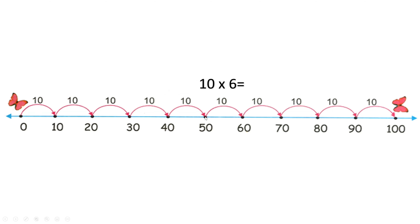10 times six. I'm going to jump 10 six times, so I need to do six jumps. Let's do it together: one, two, three, four, five, six. What number did you land on? 60. Amazing. So 10 times six equals 60.